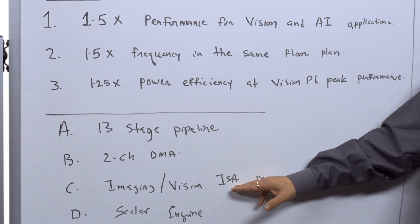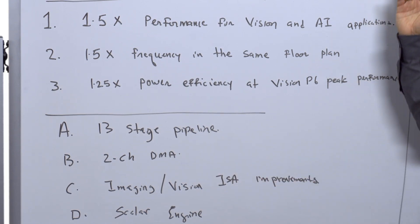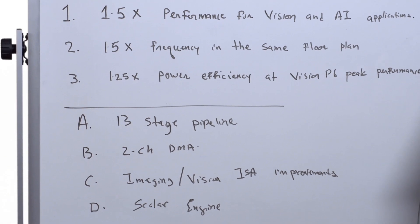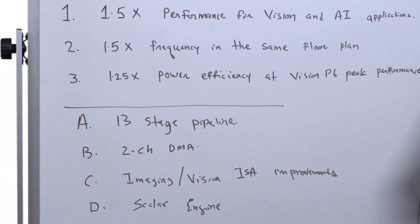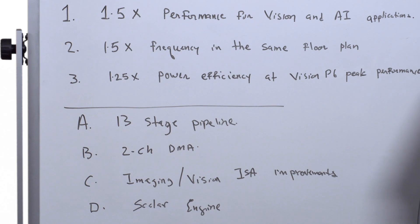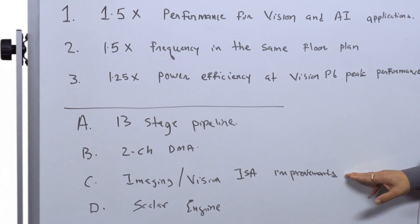Another thing, every generation, because this is a fifth generation Vision and AI DSP, every generation we look at our instruction set. And on the fifth generation, also, we have improved our imaging and vision instruction set. And with that, we can get up to 2x higher performance.